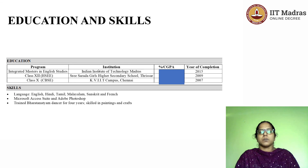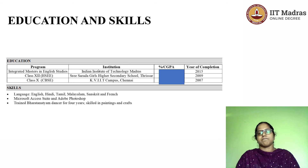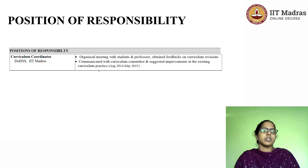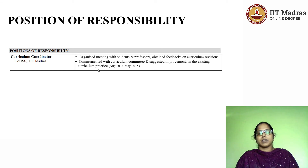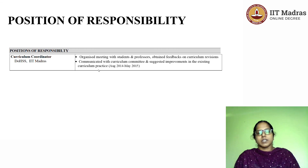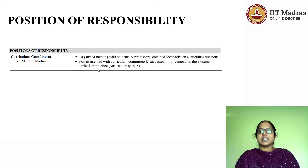Trained Bharatanatyam dancer for four years, skilled in painting and crafting. And finally, you can write about positions of responsibility, particularly those you have had in your college. For example, I was a curriculum coordinator and also a part of NSS — National Service Scheme — as a volunteer. All that can be written as positions of responsibility. That was a short tutorial on resume writing. I hope you liked the session. I will meet you with a different topic on a different day. Until then, stay safe. Take care. Bye.